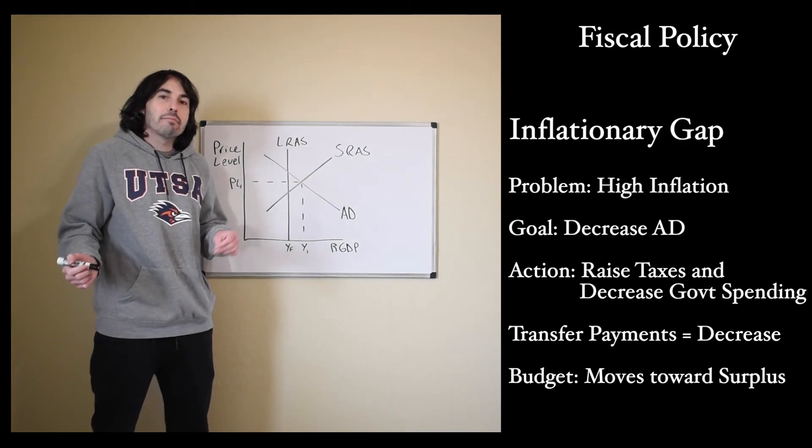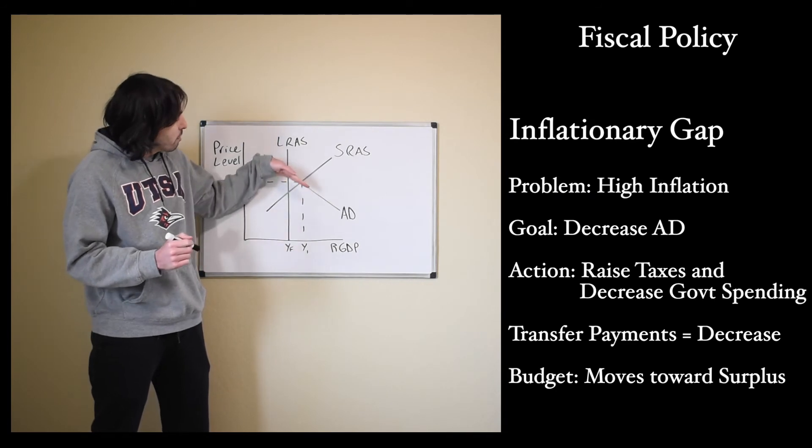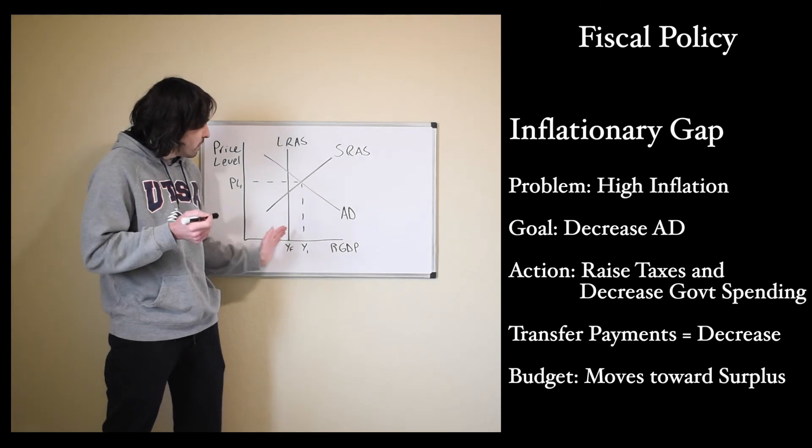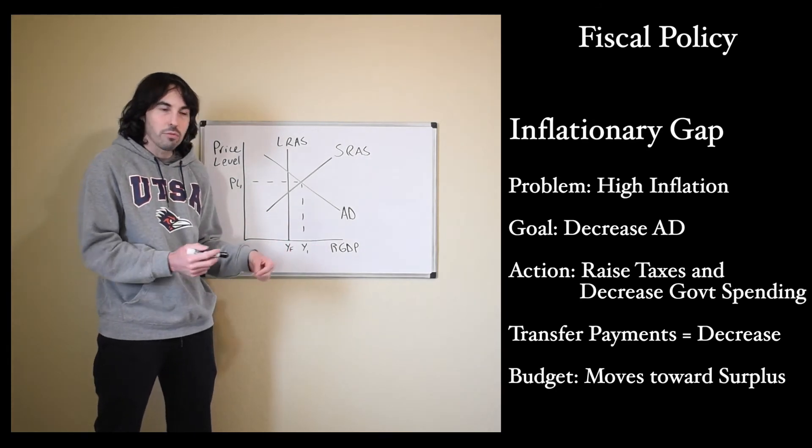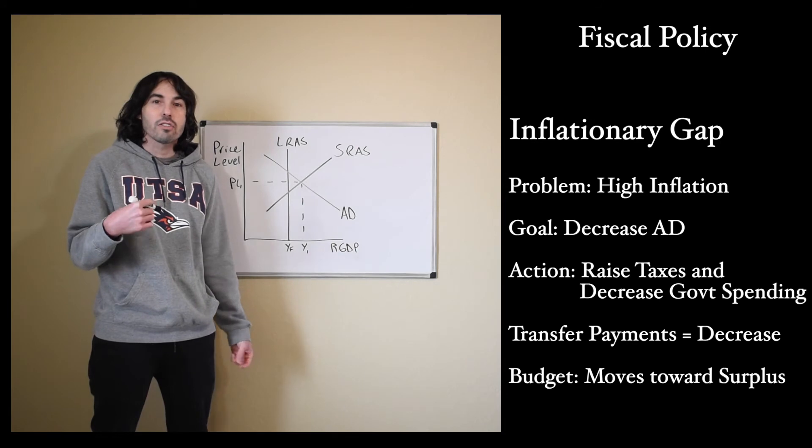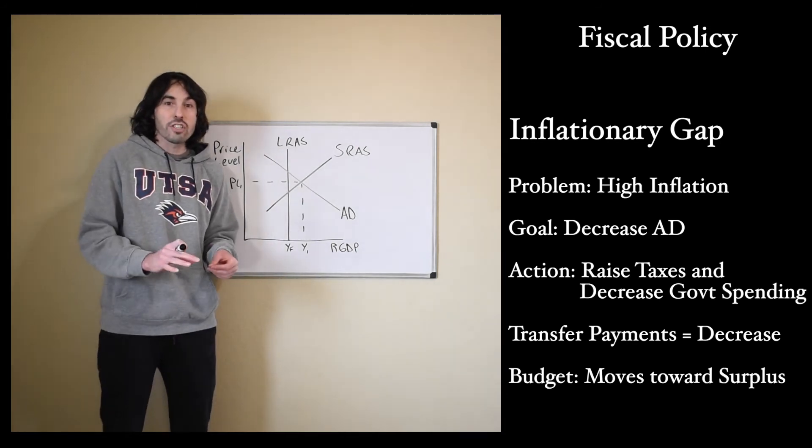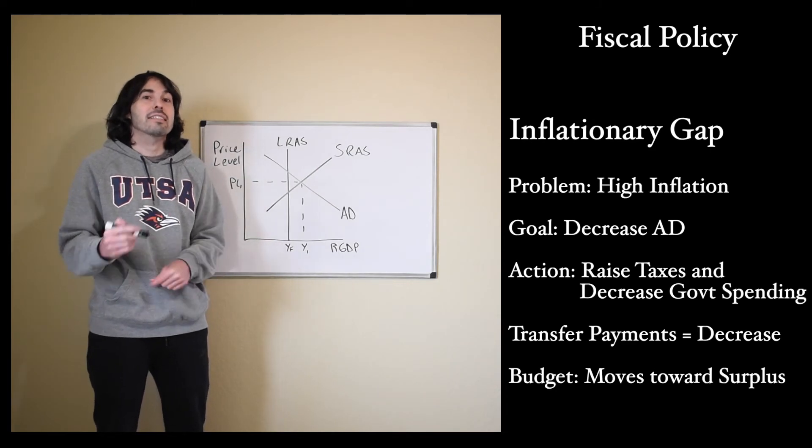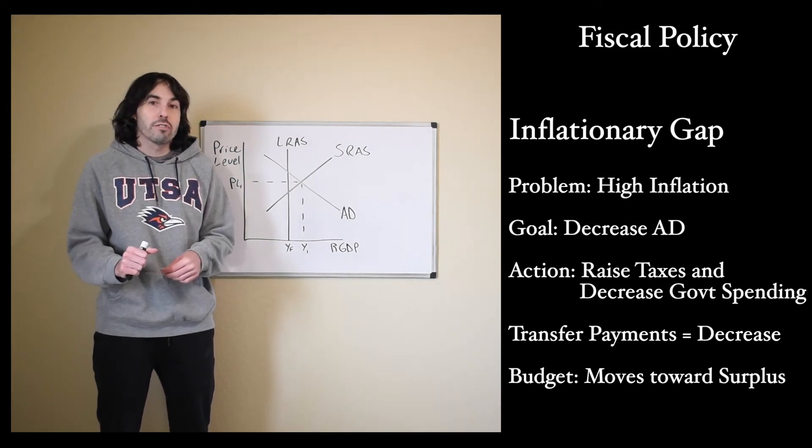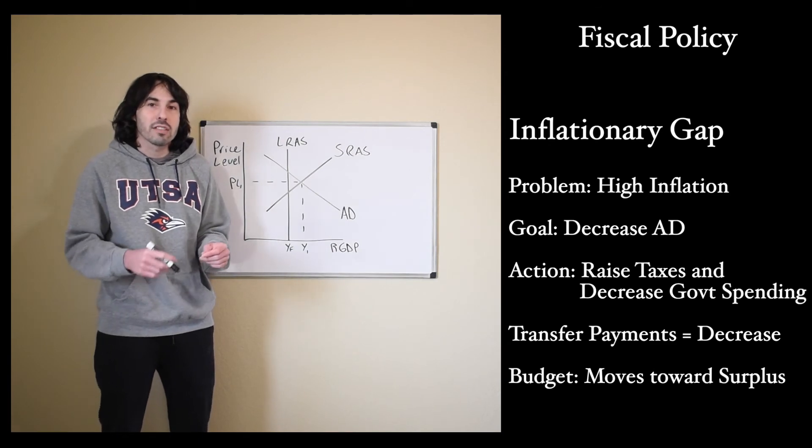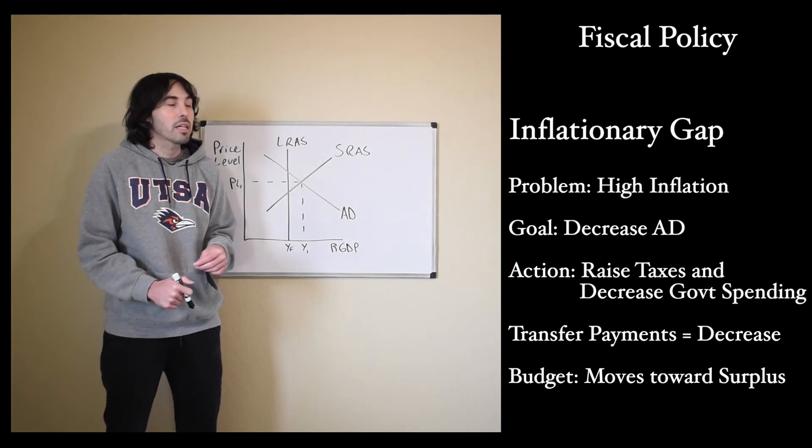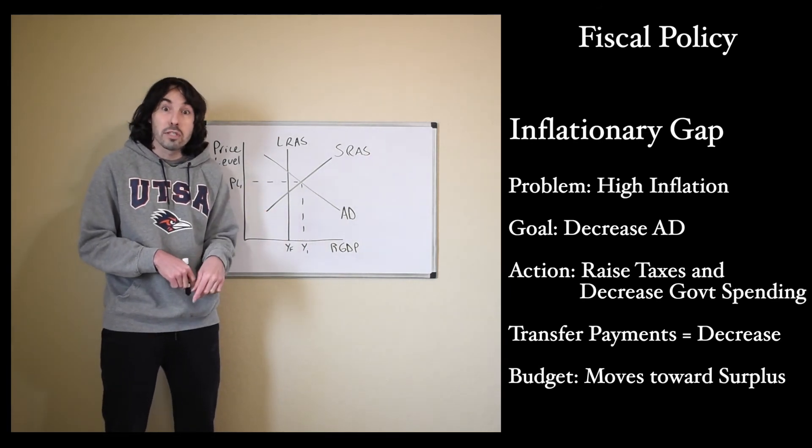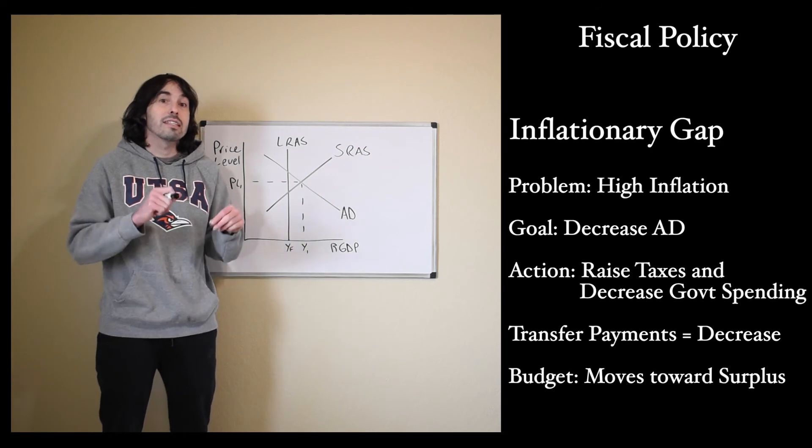Next, we're going to take a look at an inflationary gap. During an inflationary gap, our main problem is high prices. Our inflation rate is getting too high. Our unemployment rate is low. That's not really the issue that we're worried about. We're worried about high inflation and prices getting too high. First off, non-discretionary fiscal policy is going to affect this. Remember, non-discretionary fiscal policy is things that have already been written in a law in the past. The one that I want you to remember the most is unemployment benefits. That's the main transfer payment I want you to think about. In an inflationary gap, our unemployment rate is really low. So unemployment benefits are going to go down. So our transfer payments are going to decrease.